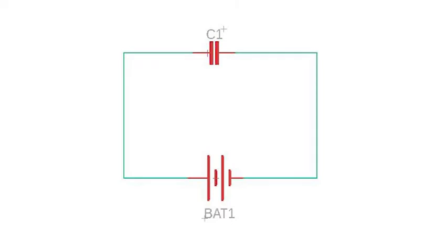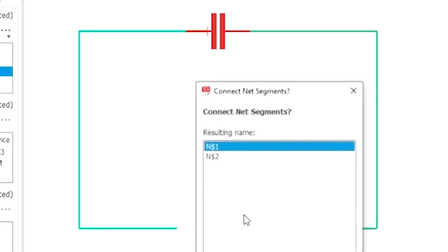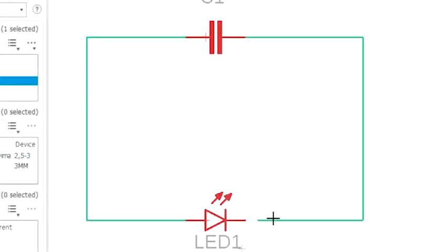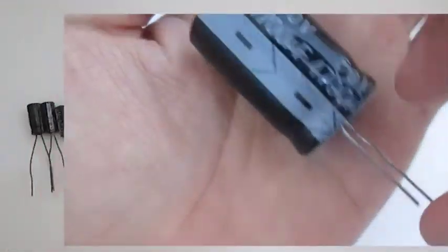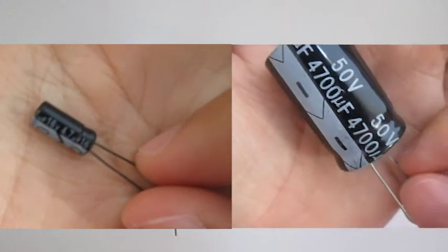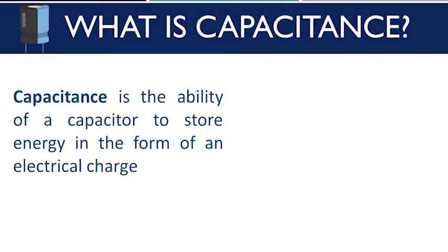The flow of charge stops when the voltage across the capacitor equals the voltage of the battery, at which point the capacitor has its maximum charge. Even after removing the battery connection, the electric charge remains in the capacitor. The only way to discharge it is by connecting its two terminals or connecting a load across them. Not all capacitors can store the same amount of charge — capacitance is the ability of a capacitor to store energy in the form of electrical charge, or simply, how good a capacitor can store electric charge.